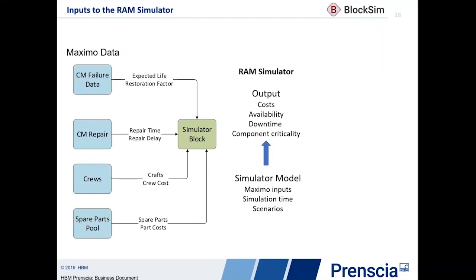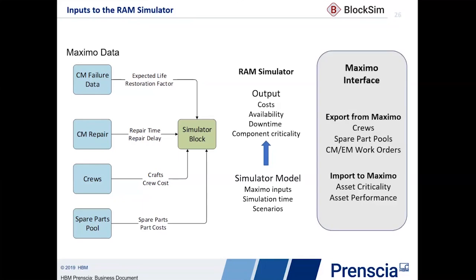Once we have those inputs set up and the simulation time configured, the outputs are key business information that can help you make better decisions about what you need to do should you have a problem in your process. Maintenance cost information, downtime cost information, availability, clear downtime, component criticality — all of those are output from the system and back into Maximo. If we're able to provide that key information and build these simulation models, we can provide real information on asset criticality and system performance that can actually be used to make better decisions.